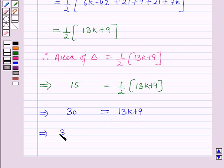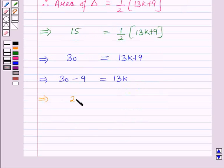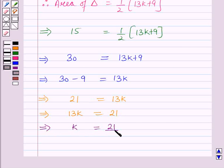Which implies 30 minus 9 equals 13k, which implies 21 equals 13k, which further implies k is 21/13. So the value of k is equal to 21/13. This is the solution of the given question.